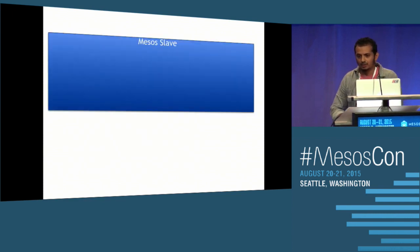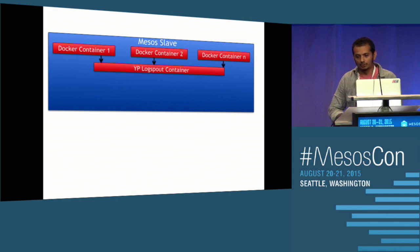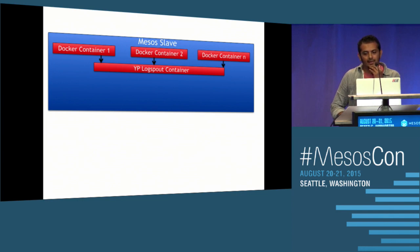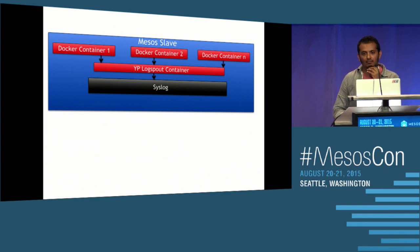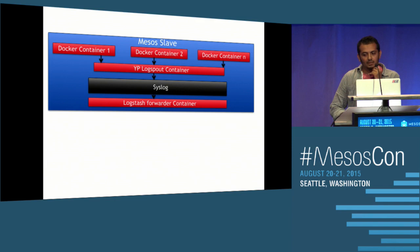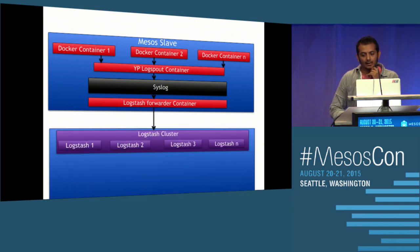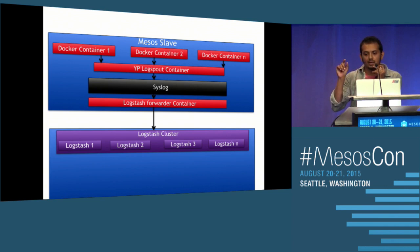Here's how we did it at YP. You have a Mesos slave running many containers — Docker 1, 2, and 3. We run a logspout container, a customized version from YP based on the open source logspout, which aggregates logs from each and every container and outputs to syslog, tagging each with the container ID. A logstash forwarder then picks up all logs from syslog and sends them to a logstash cluster. All these pieces — logstash and the logstash forwarder — are running in Docker containers through Mesos and Marathon.